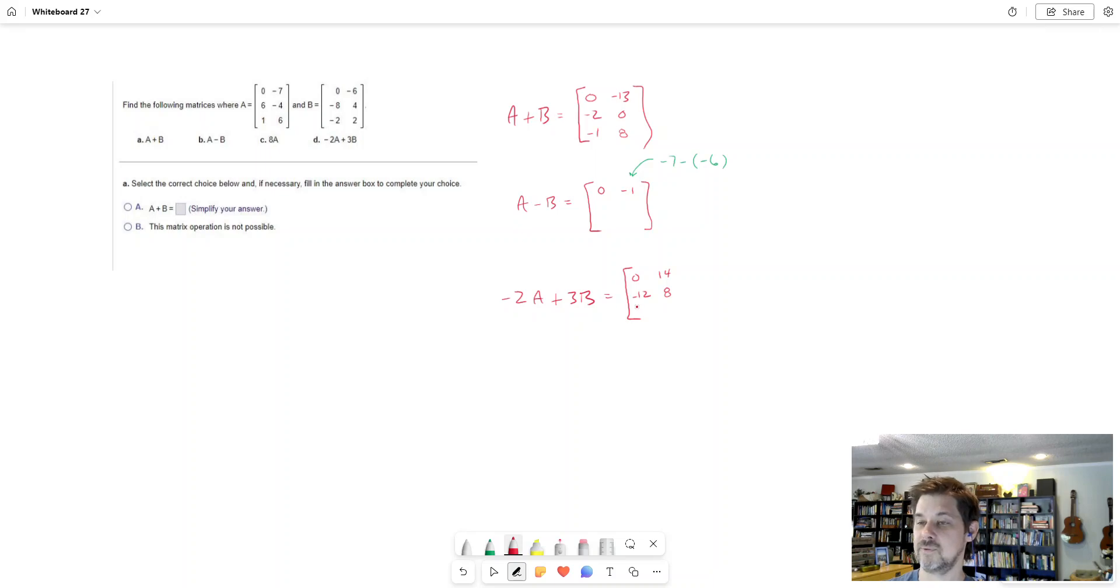Negative 2 times 1, negative 2. Negative 2 times 6, negative 12. So that right there, this part, is just negative 2A. That's just what you get if you take matrix A times the number negative 2. Now as I do this, I've showed you how to do part C. If you want to find 8A, matrix A times the number 8, you just multiply each entry where it is by 8. That's what you do.